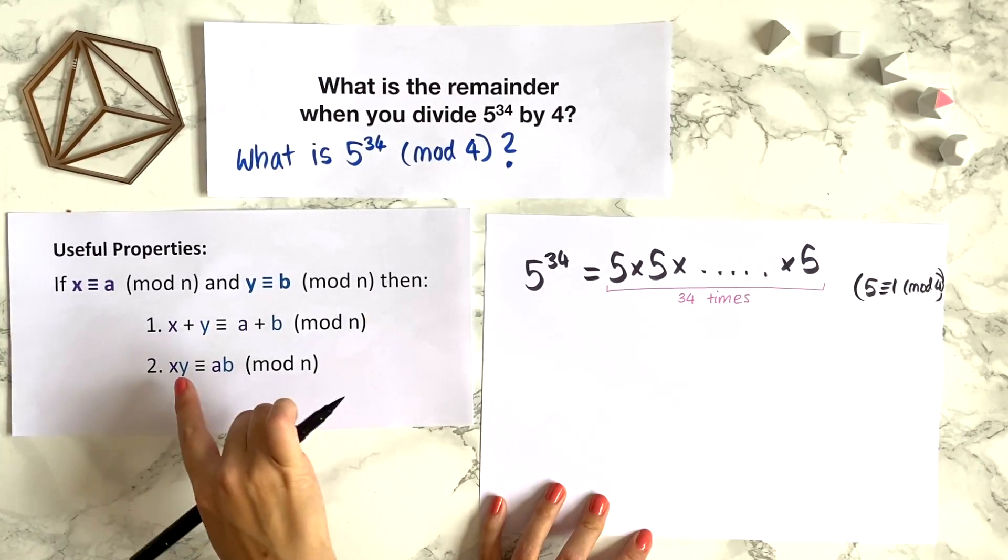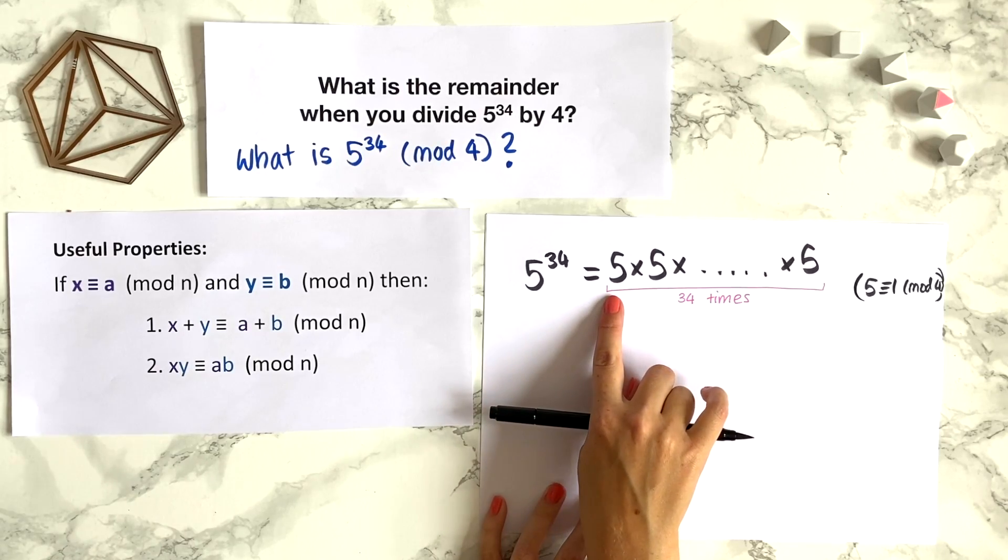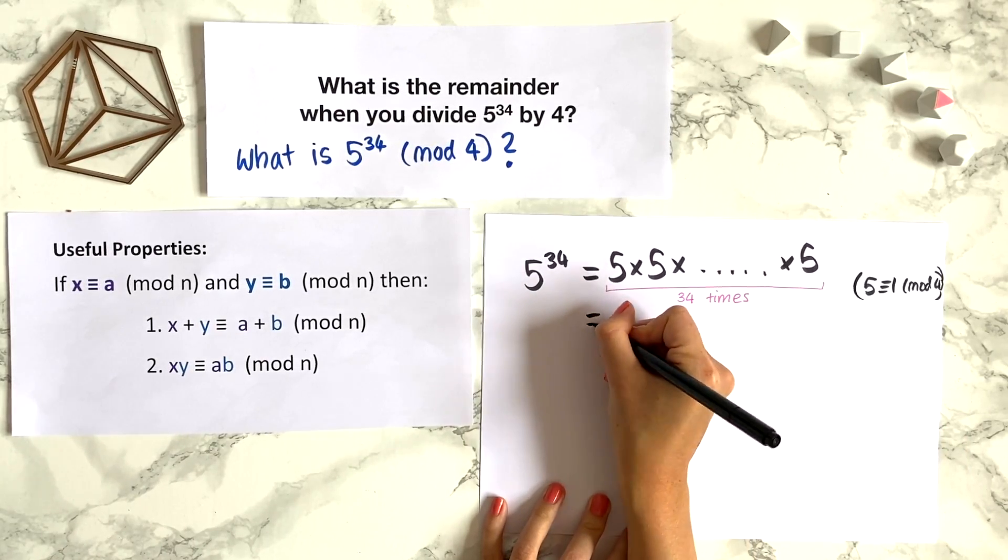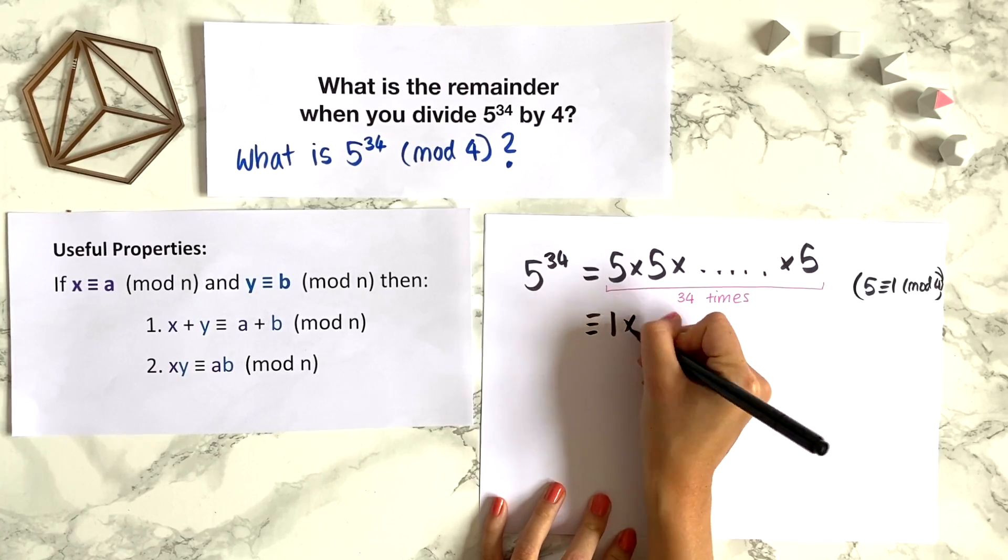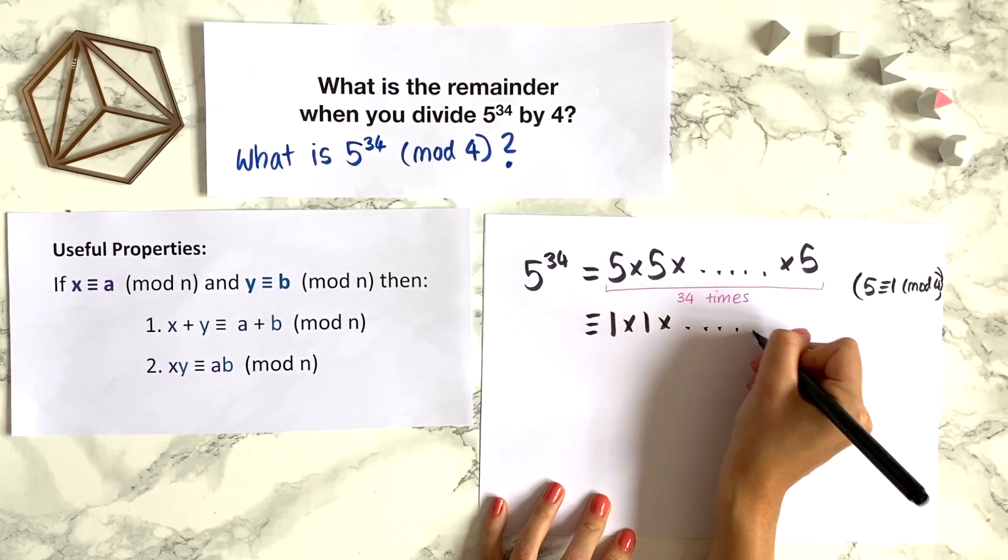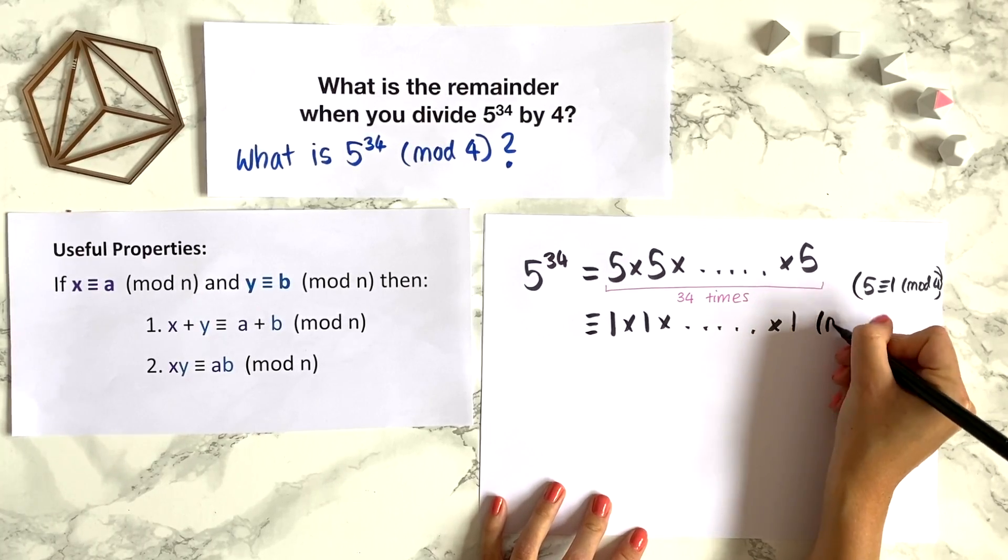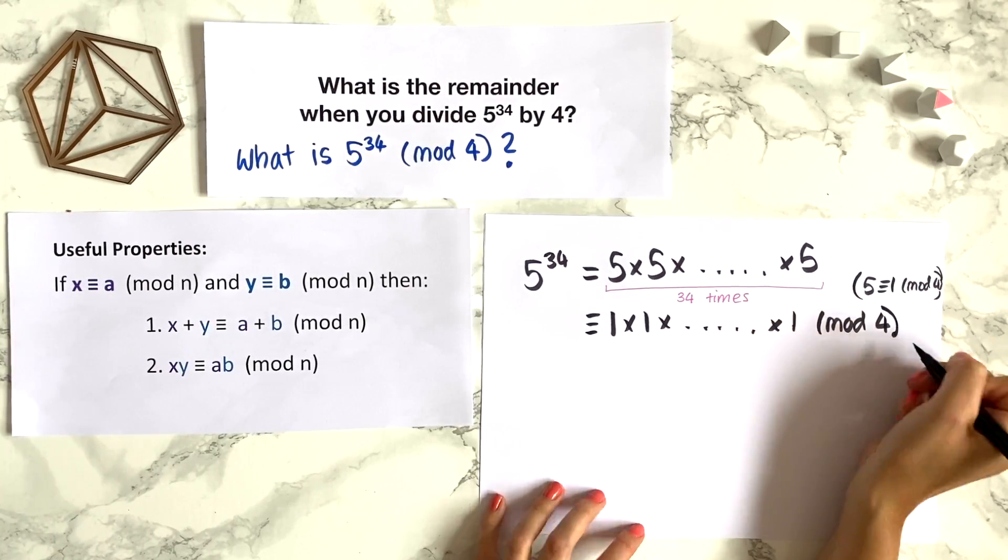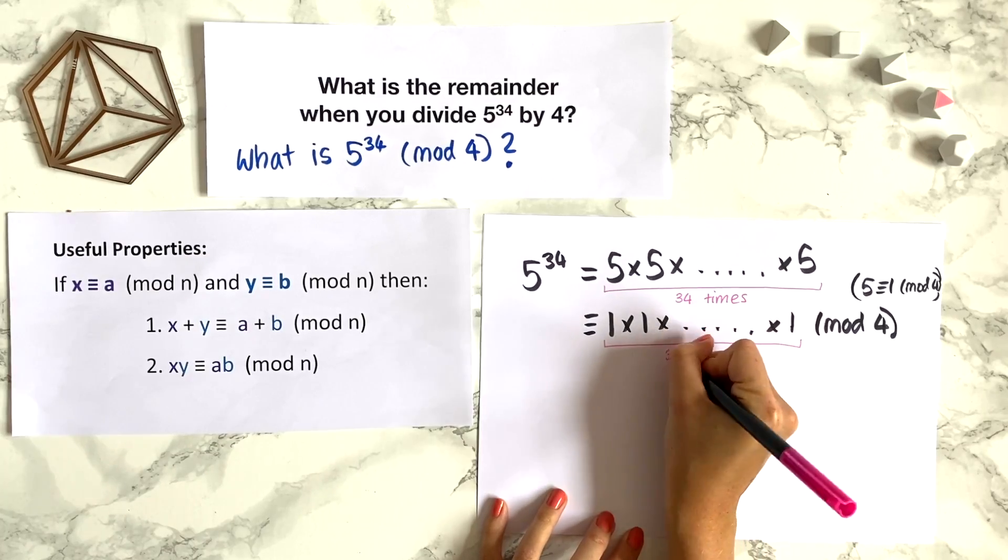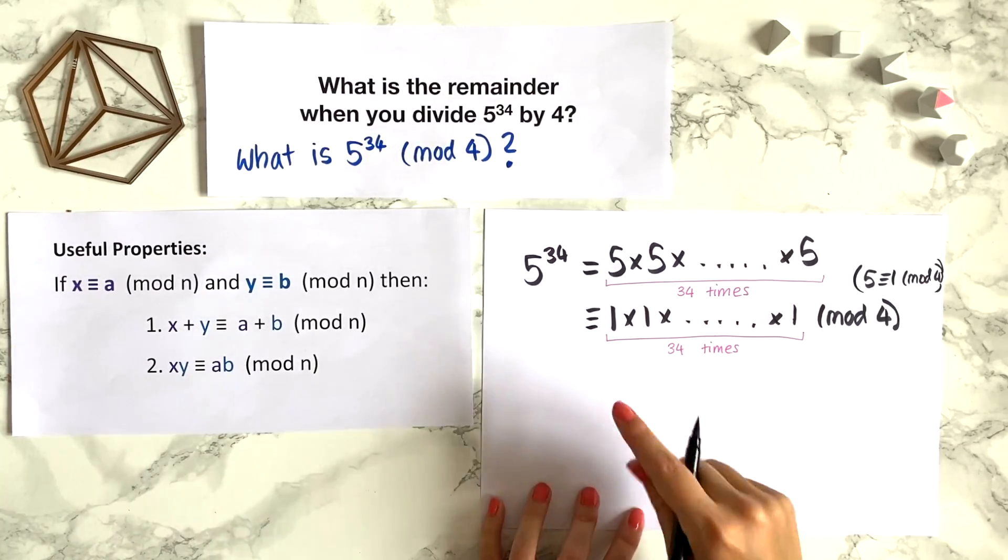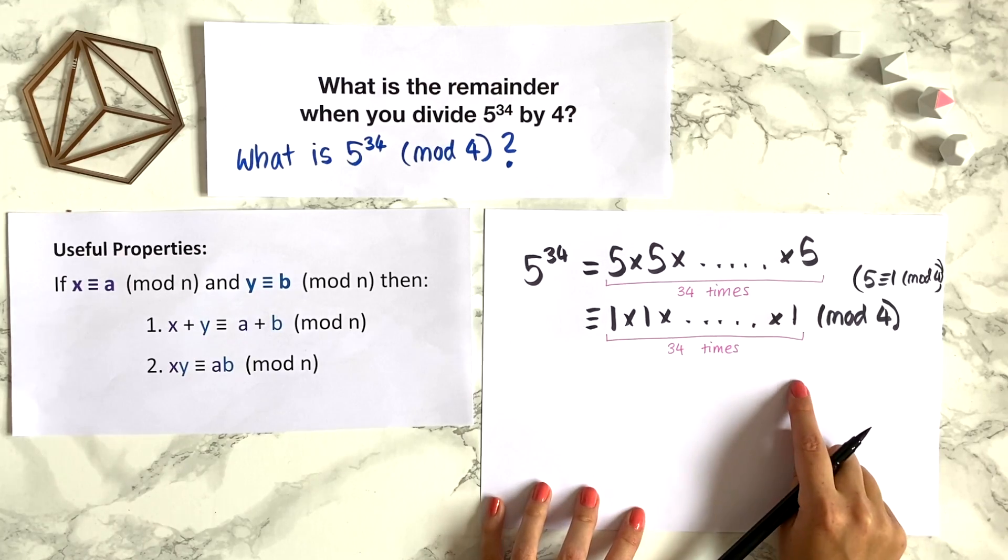And because of this, using this theorem, we can say that 5 times 5 times 5 and so on is congruent to 1 times 1 times 1, 34 times, in modulo 4.